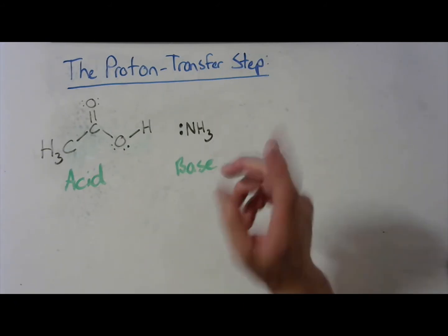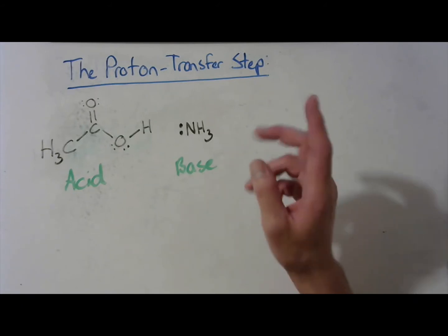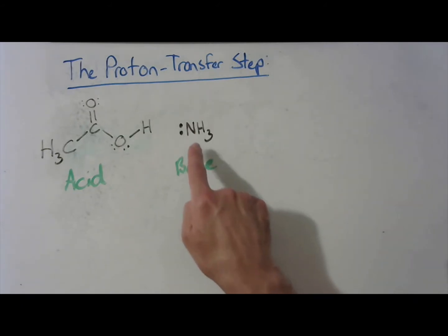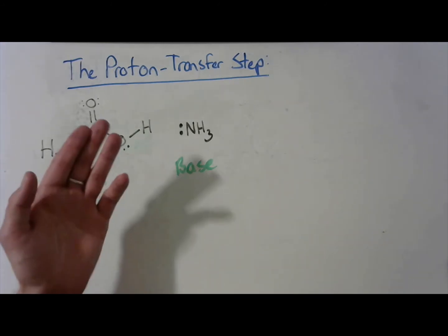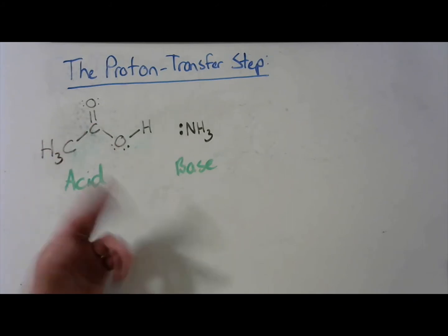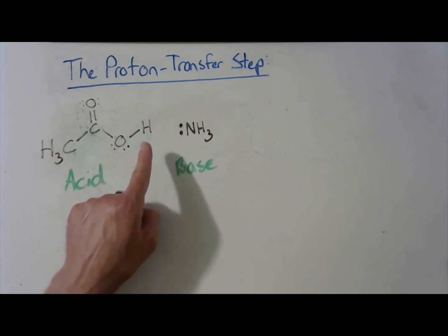Okay, so what we're going to do here is we're going to show the base taking the most acidic proton from this acid. Now, here it's pretty obvious. We have a carboxylic acid functional group. This proton is going to be our most acidic proton here because it's part of the carboxylic acid functional group.